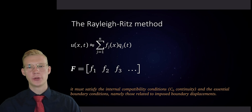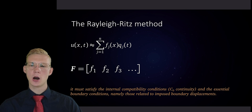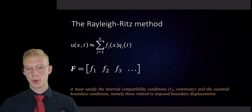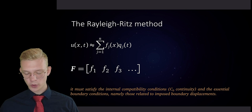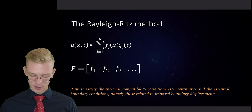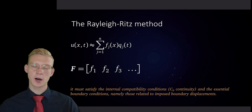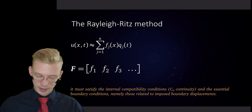Ladies and gentlemen, welcome back to Engineering Dynamics. In this video we will be talking about the Rayleigh-Ritz method, on how to get the eigenfrequencies of a continuous system, where we propose a set of functions which will be our eigenshapes and where we would like to find the eigenfrequencies of that system with the given eigenshapes that we chose. So let's jump right in.